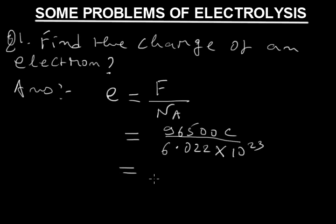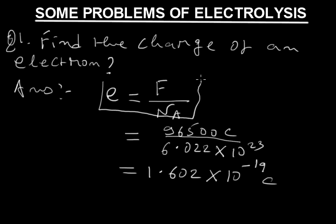So the calculated value of electron charge is 1.602 × 10⁻¹⁹ coulomb. We must know the relation of charge of electron with Faraday and Avogadro's number.